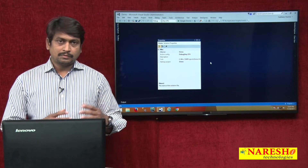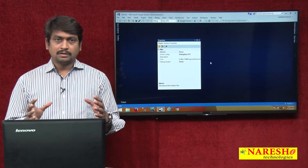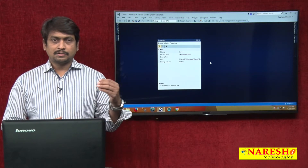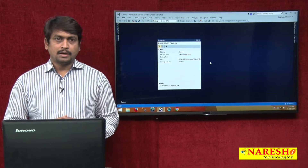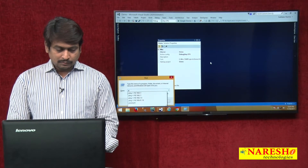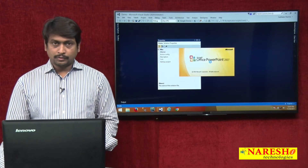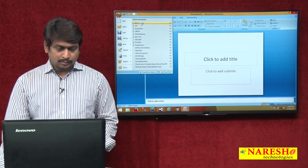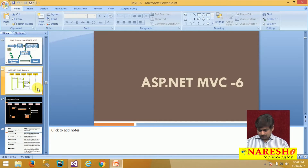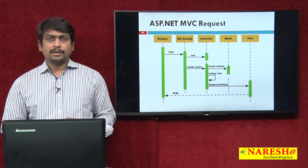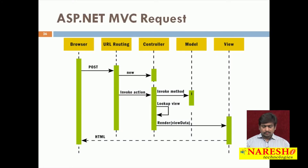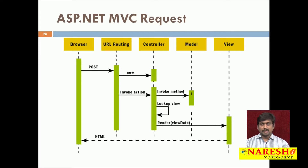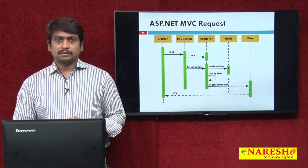You can watch the previous videos where we discussed the basic architecture of MVC, how requests come to the application, and how the request flow happens. I will give you one more overview of the request flow. This is the actual request flow of ASP.NET MVC: first the client request comes from a browser, and the routing engine is responsible for identifying the request and selecting a controller.